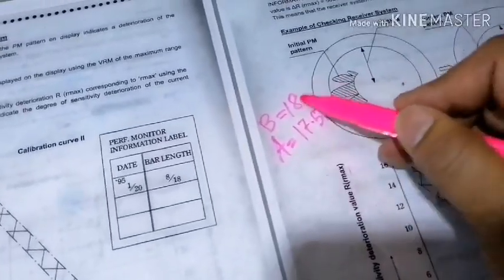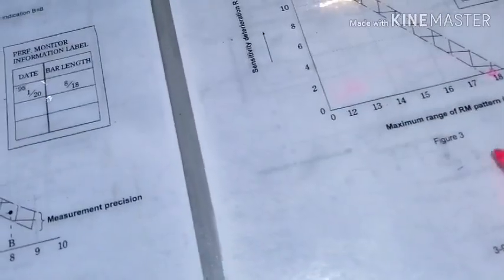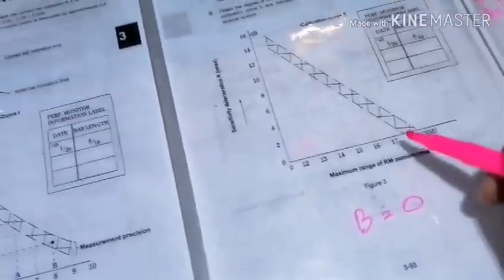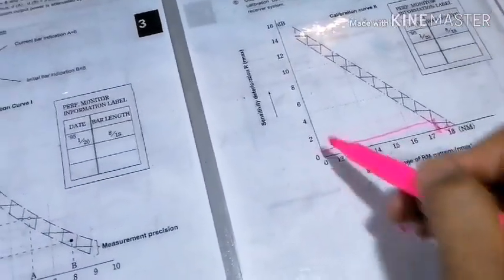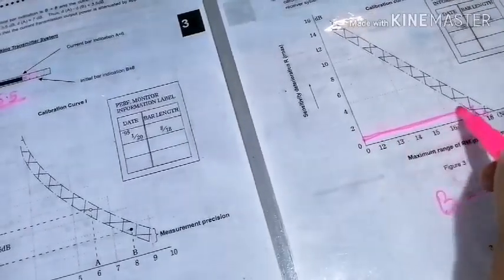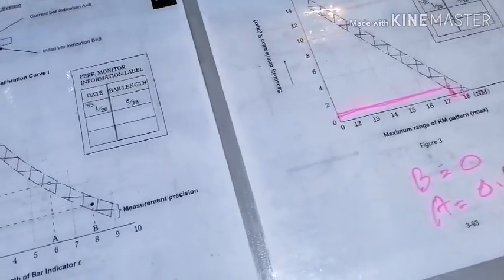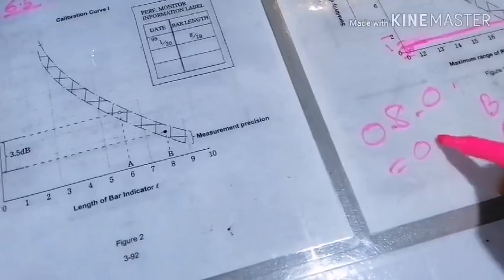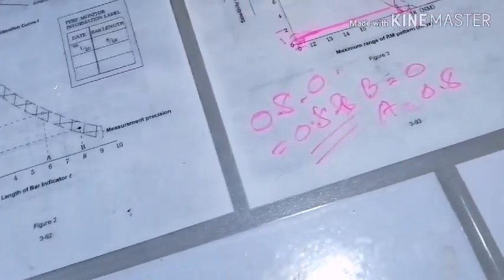Now let's check receiving capacity. Initially B was 18 meters and the present value is 17.5 meters. For 18 meters it was 0 — meaning no attenuation. For 17.5 meters we check the graph and find approximately 0.8 decibels. So A equals 0.8, indicating an attenuation of 0.8 decibels.